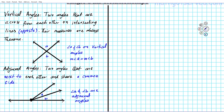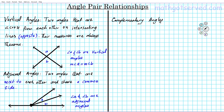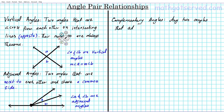The next terminology you want to keep in mind is complementary angles. This one refers mainly to magnitude — it doesn't have to do with positioning. Complementary angles are any two angles that add up to 90 degrees. They do not have to be adjacent; they just have to add up to 90 degrees.